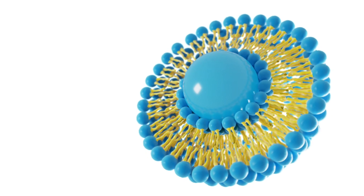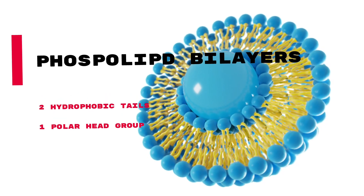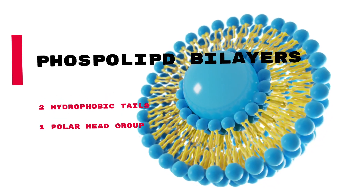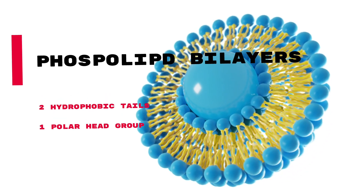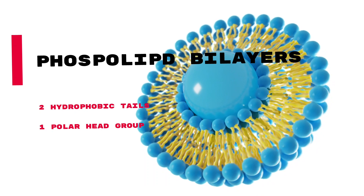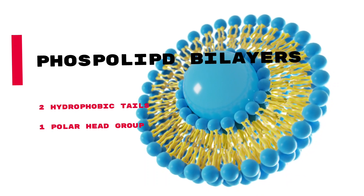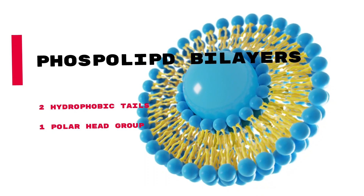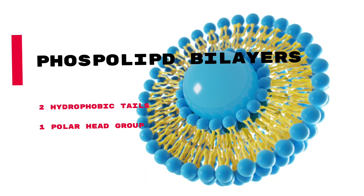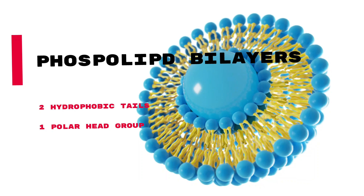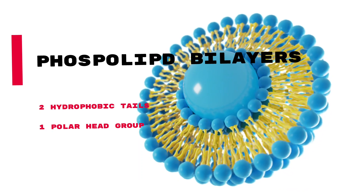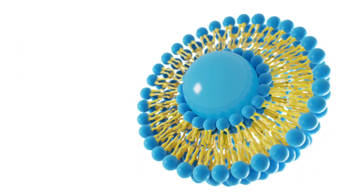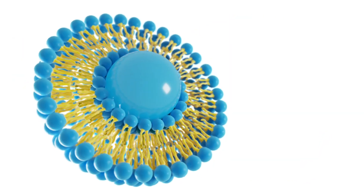Phospholipids are amphipathic molecules that consist of two segments of fatty acyl chains and one polar head group. Fatty acyl chains are hydrophobic tails, and the polar head group is water-loving — it can interact with hydrophilic molecules and water.